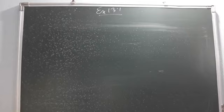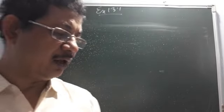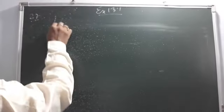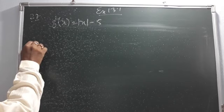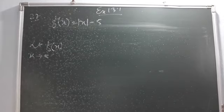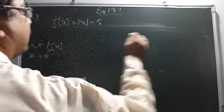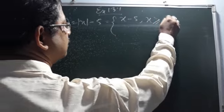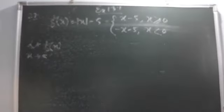Question 26 you can do, and 27 — they have said find limit f(x) as x tends to 5, where f(x) = |x − 5|. We have to find this limit. When a modulus sign is there, you have to break it. Modulus of (x − 5) can be written as (x − 5) if x is greater than or equal to 0, and −(x − 5) if x is less than 0.